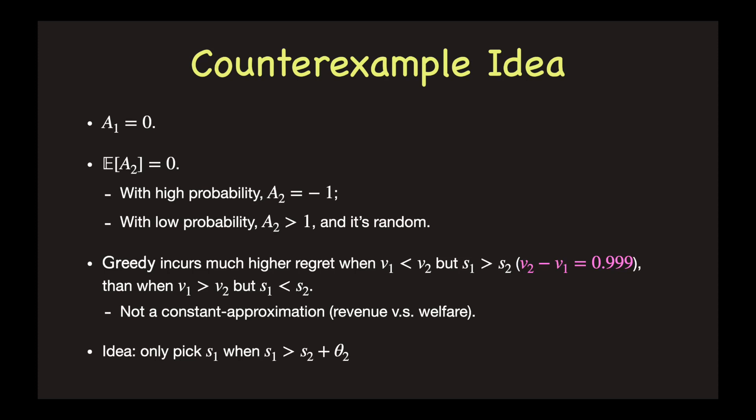It turns out Greedy is not a constant approximation here in terms of regret. We are not going into the calculation details, but for those of you familiar with pricing, the math here is almost the same as the super constant gap between the optimal revenue and welfare, where the value distribution is equal revenue.